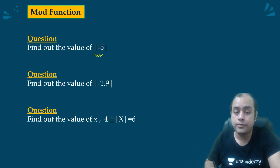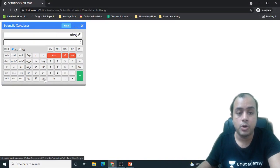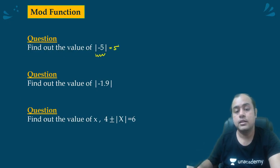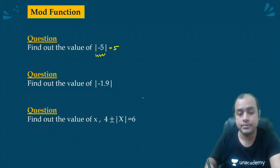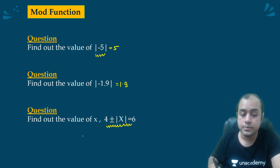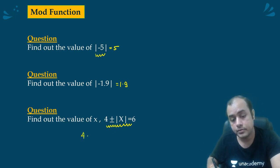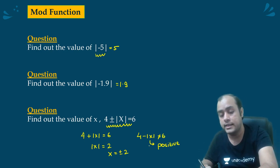Now the mod function. Mod of minus 5. Very easy. First put 5, then plus minus, then take mod, it is 5. Again, minus 1.9. First put 1.9, then plus minus, then mod x, 1.9. Next, it is asking if we use the mod function to solve something like this: 4 plus minus mod x is 6. So 4 plus mod x can be 6, which means mod x can be 2. So you can say x is plus minus 2. 4 minus mod x cannot be 6 because it is positive number. I do not think here we will need the use of virtual calculator.